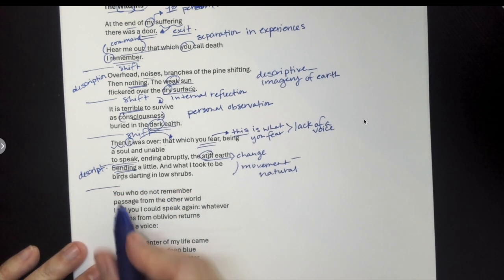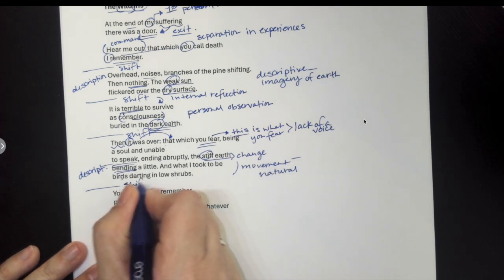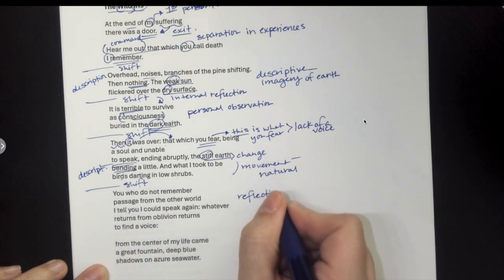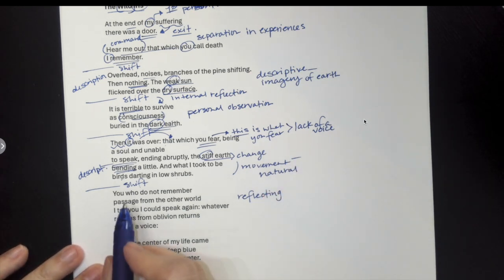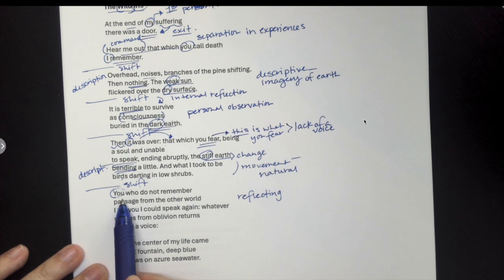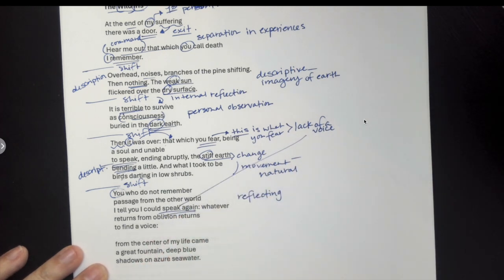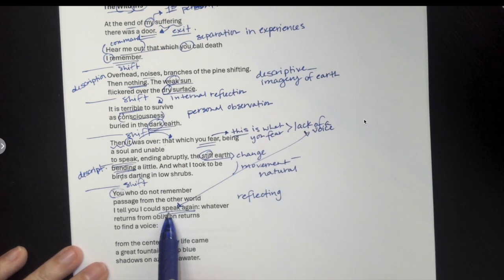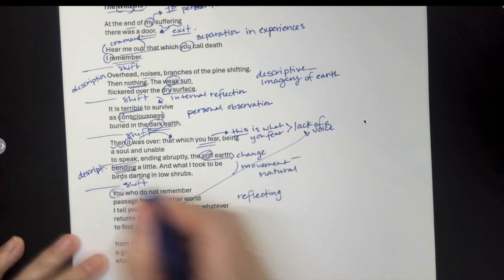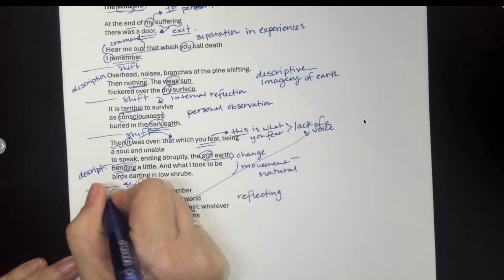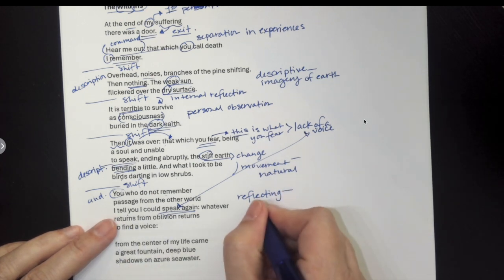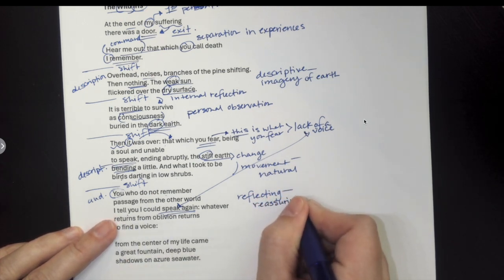We have another break. We have another kind of shift here. We have our speaker again, addressing us and again, reflecting on this experience and reflecting on what they know now. And again, she's directly addressing us. You who do not remember passage from the other world. I tell you, I could speak again. So now we have a voice. So we've got that connection here. She says, you fear this lack of a voice. She says, I tell you, I could speak again. So when she comes back, she says, I could speak again. And so you, us, the audience, I know that you don't remember this. I know that you fear this, but she's reassuring. Our speaker is reflecting and also kind of reassuring us about this process.